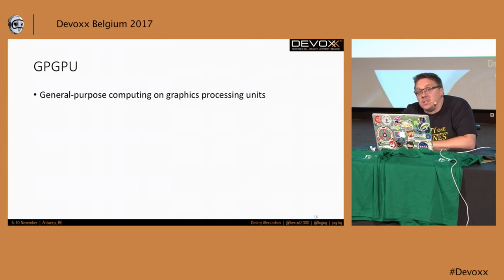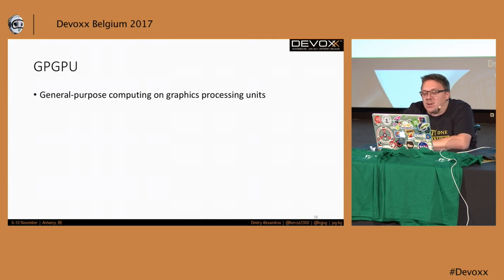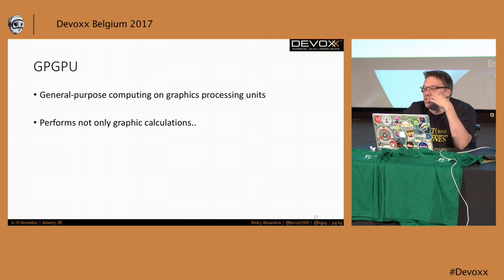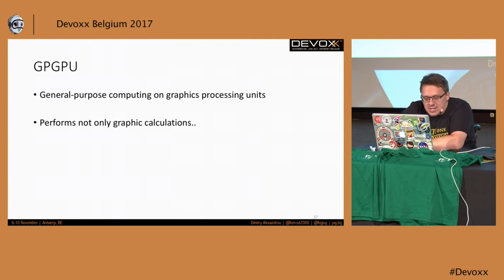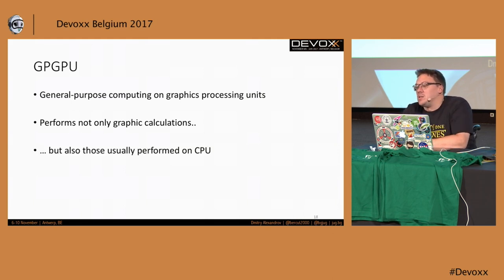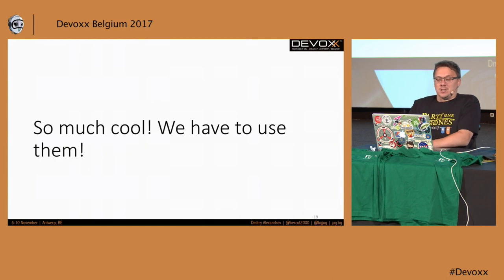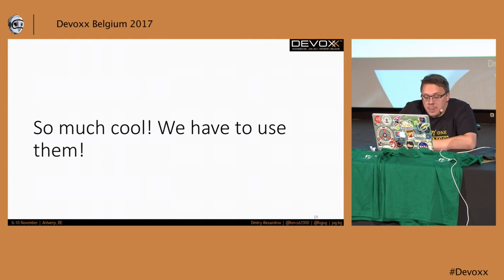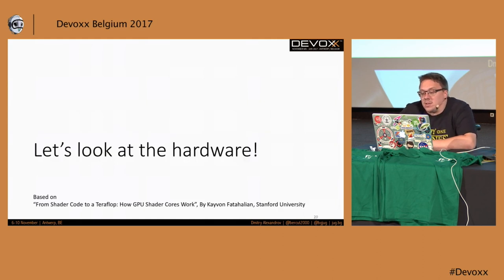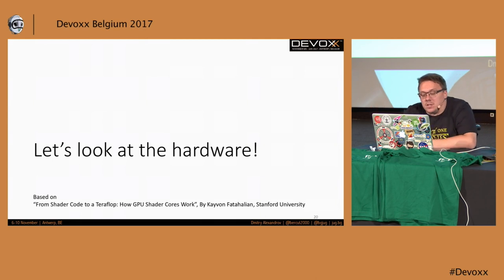You've probably heard the abbreviation GPGPU — it stands for General Purpose Computing on Graphics Cards. It performs calculations that are not only for image processing; it can do tasks normally done by the CPU. Since we have this capability, we want to use it. But first, let's look at the hardware — this part of the session is based on Stanford University's GPU explanations.